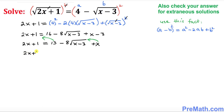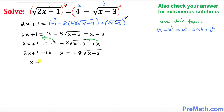We move the 13 and x to the left hand side: 2x plus 1 minus 13 minus x equals negative 8 times the square root of (x minus 3). Simplifying the left side: 2x minus x is x, and 1 minus 13 is negative 12, so we get x minus 12 equals negative 8 times the square root of (x minus 3).